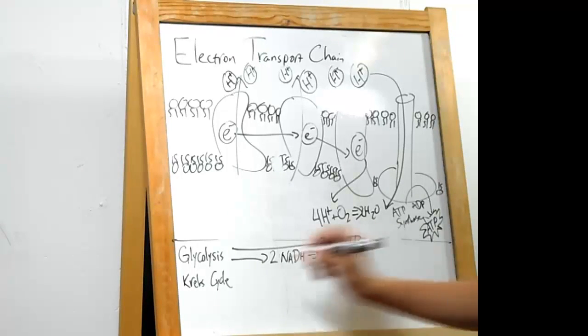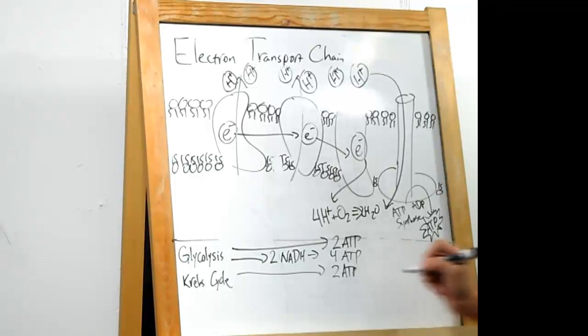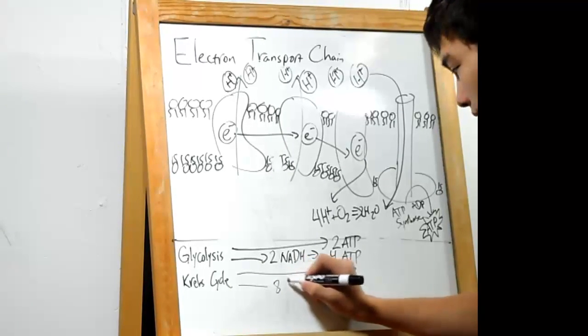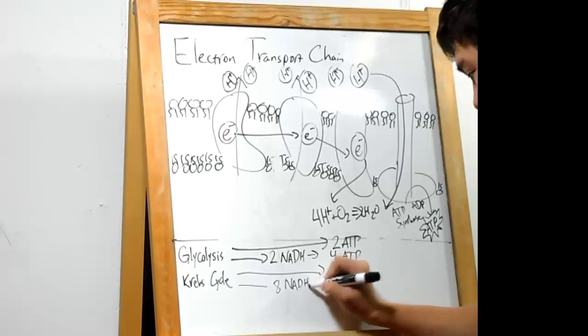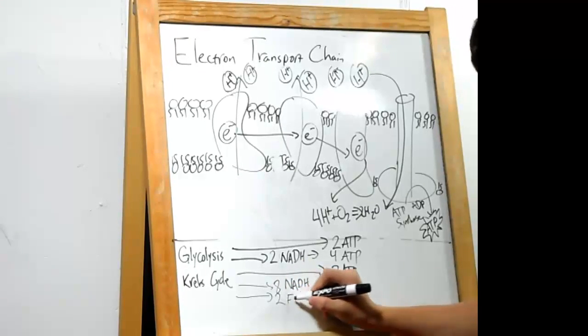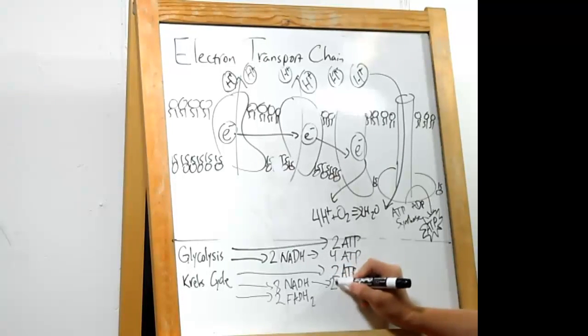These NADH went into the electron transport chain, and their electrons produced another four ATP. As for the Krebs cycle, that produced two ATP from the two pyruvic acids we have. It also produced another eight NADH and another two FADH2. These produced another four ATP.